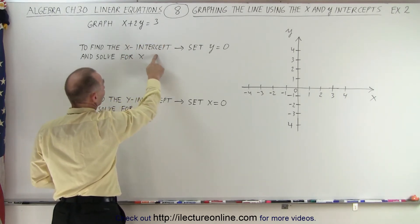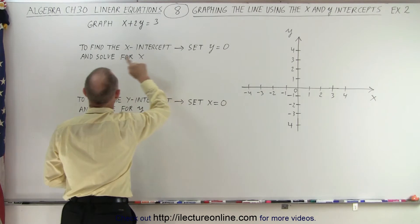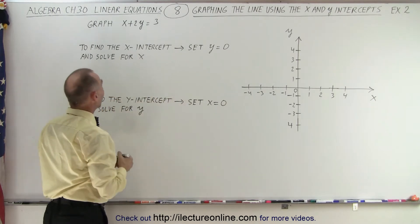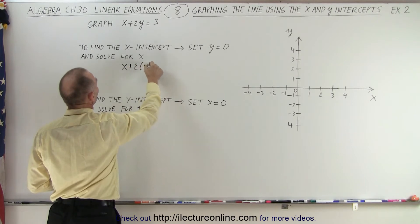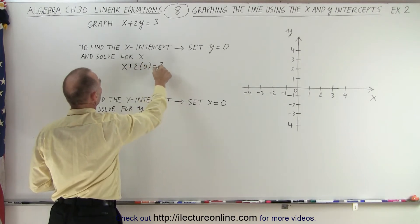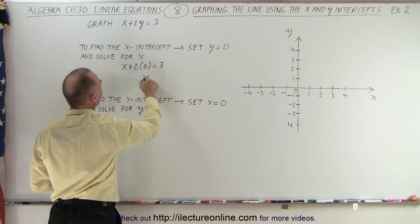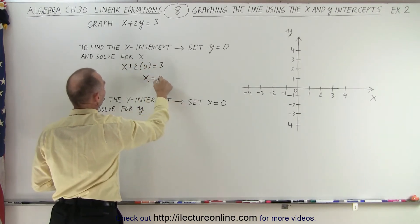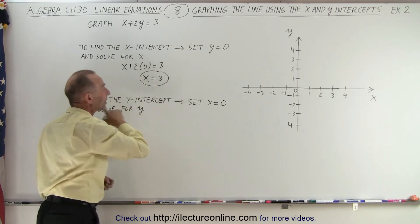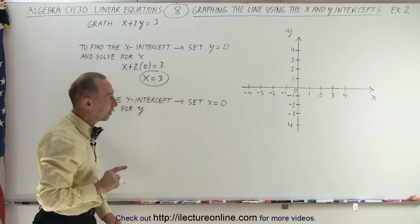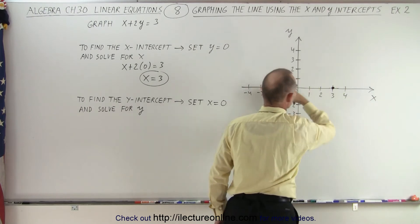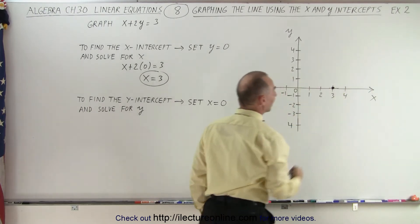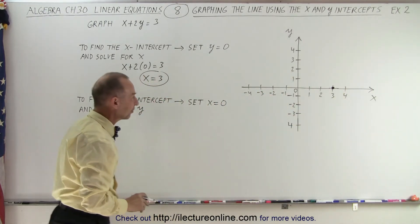To find the x-intercept, we're going to set y equal to 0 and solve for x. So we end up with x plus 2 times 0 equals 3. Of course, this is 0. We get x equals 3, and that is the x-intercept — right there when y is equal to 0, which means it's the point on the x-axis.